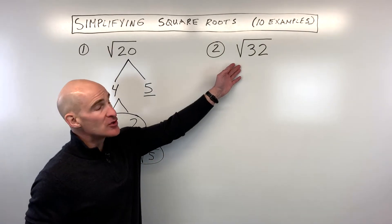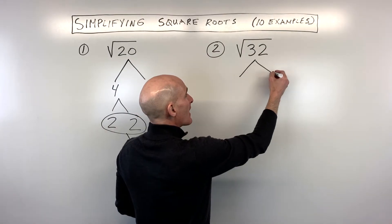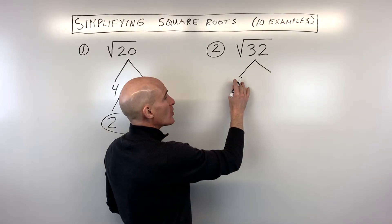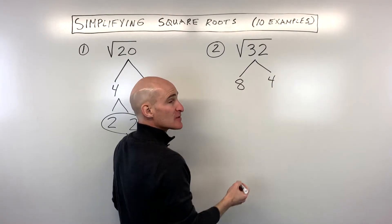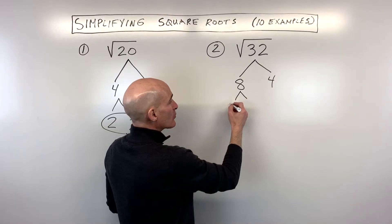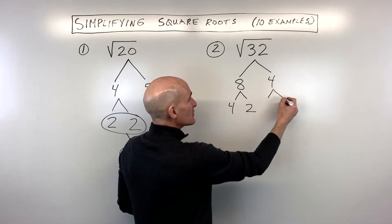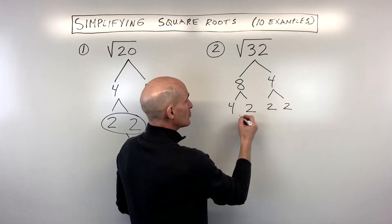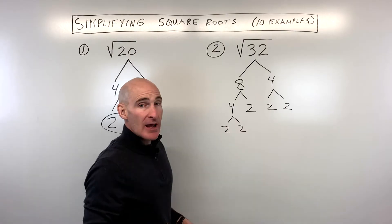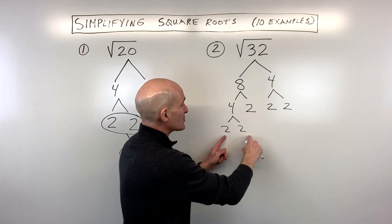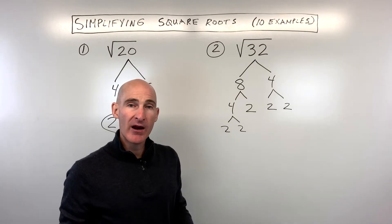For example 2, the square root of 32 — let's break that down into its prime factors. What two numbers multiply to 32? That would be 8 times 4. Then 8 can be broken down into 4 times 2. This 4 is 2 times 2, and this 4 is also 2 times 2. Now you just want to look at the numbers at the ends of the branches — those are the prime factors — and look for a pair.